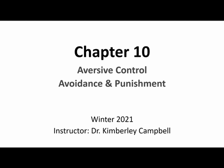Up to this point in this course, we've talked mostly about reinforcement. We've alluded to the existence of punishment and talked about how it might apply in some situations, but we left the bulk of that discussion for a future chapter. This is where we're actually going to start talking about things like punishment, and before that, we're going to talk about avoidance.